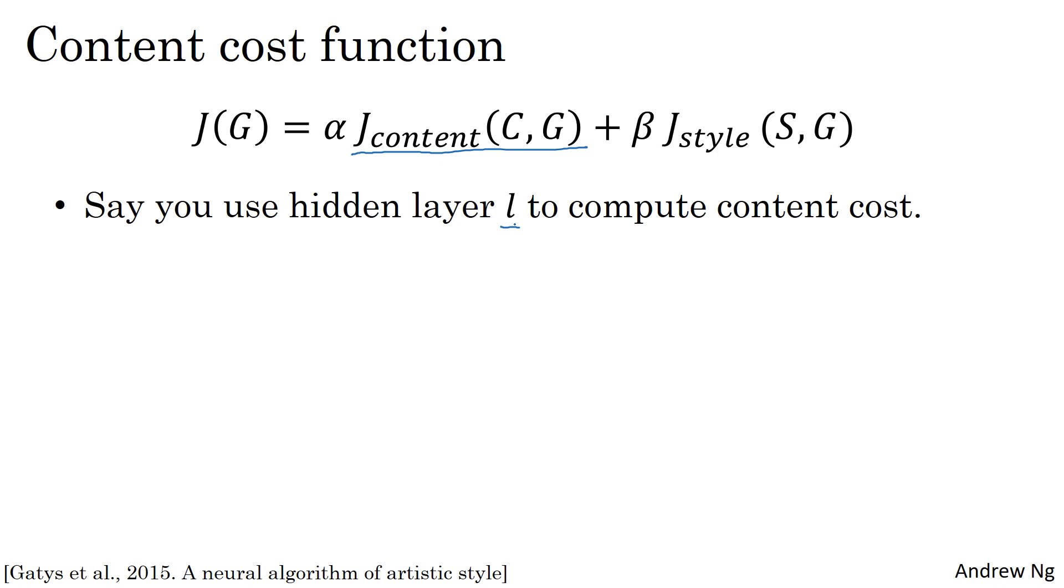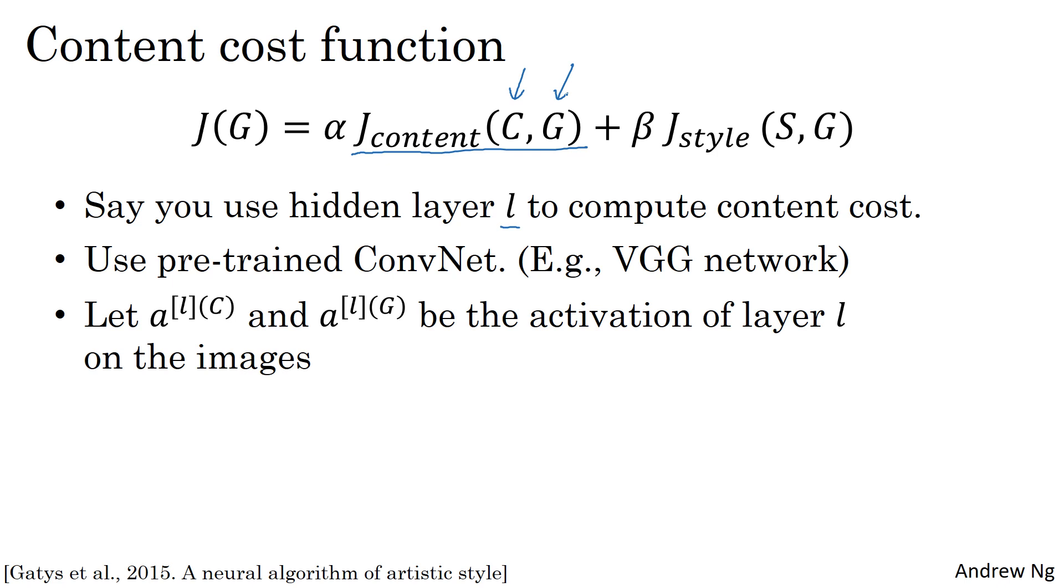What you can do is use a pre-trained ConvNet, maybe a VGG network, or some other neural network as well. Now you want to measure: given a content image and a generated image, how similar are they in content?